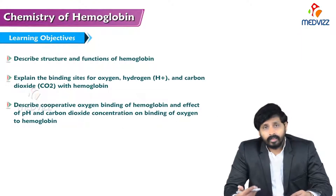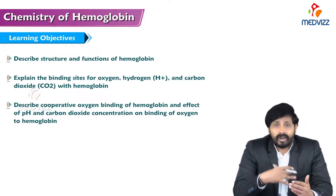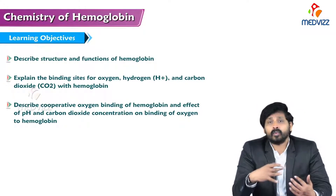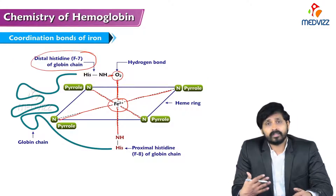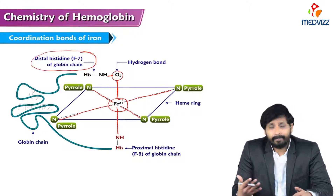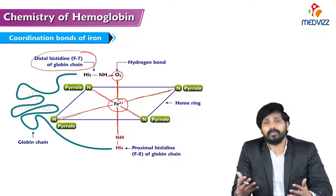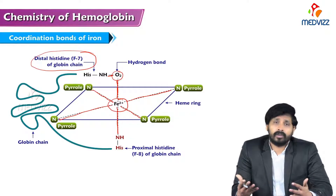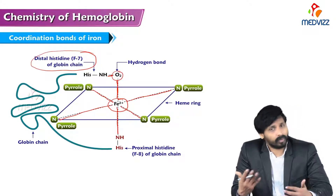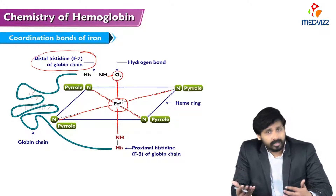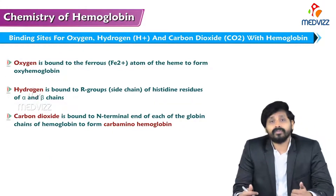In this video we will discuss the binding mechanism of oxygen, hydrogen, and carbon dioxide with hemoglobin. In previous videos we discussed the valences of iron present in the heme — four valences satisfied by nitrogen atoms of pyrrole rings, the fifth by the histidine group attached to the globin chain, and the sixth valency by the oxygen atom.